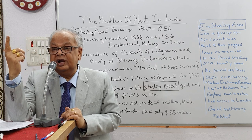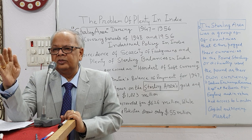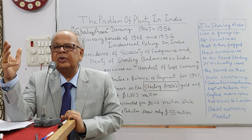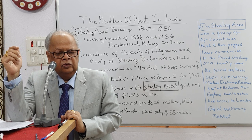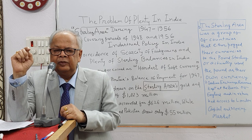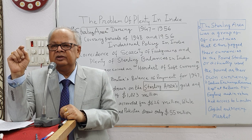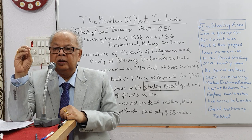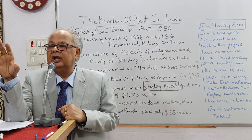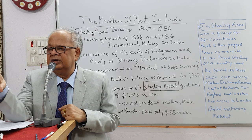It was found that there was a threat to United Kingdom as the number one country. In the 20th century, there is a decline in the supremacy of the United Kingdom and the emergence of the United States of America as the supreme power in the global economy. In this context, the period 1947 to 1957 is termed as the problem of plenty in India, under the sterling block.